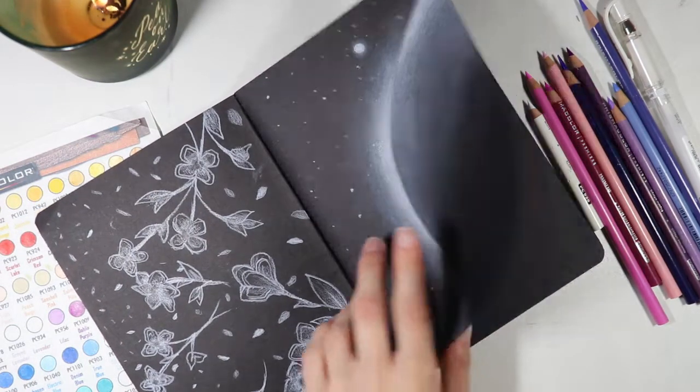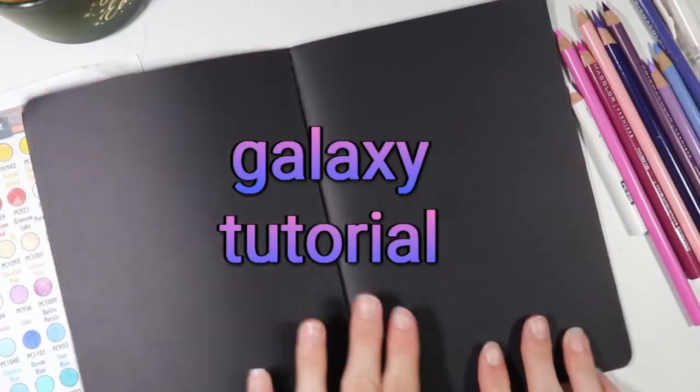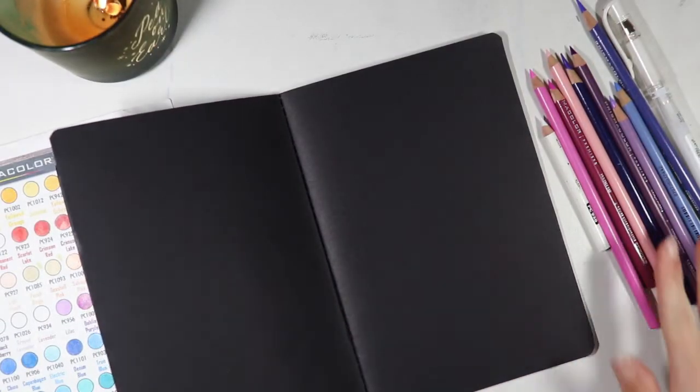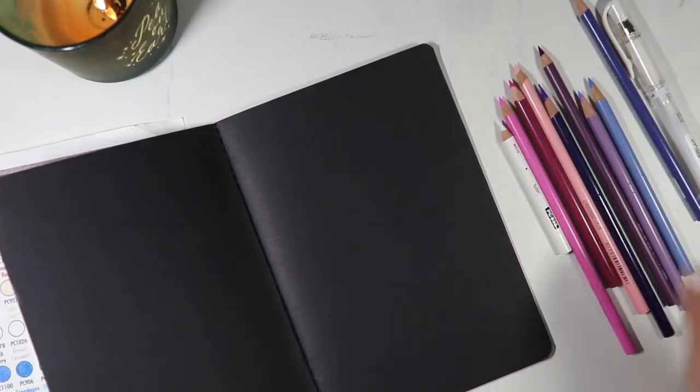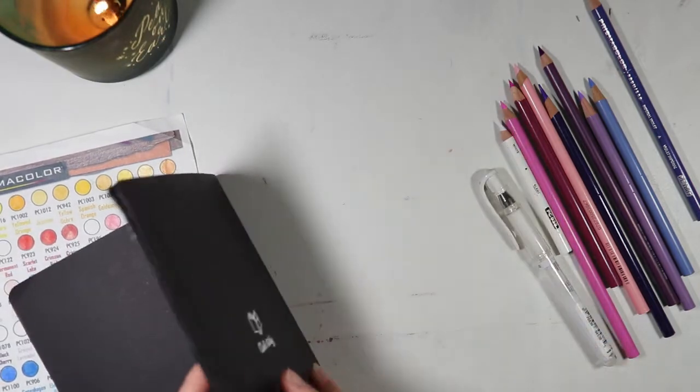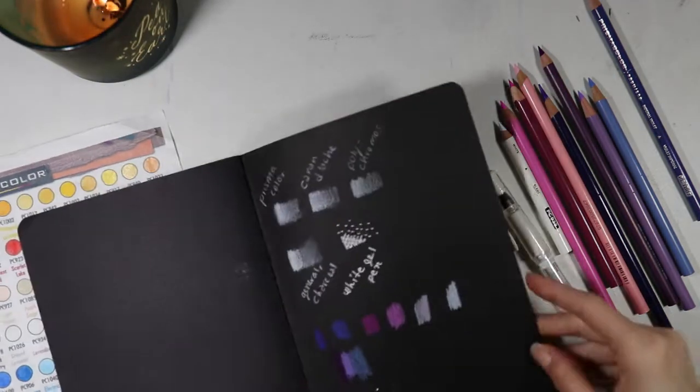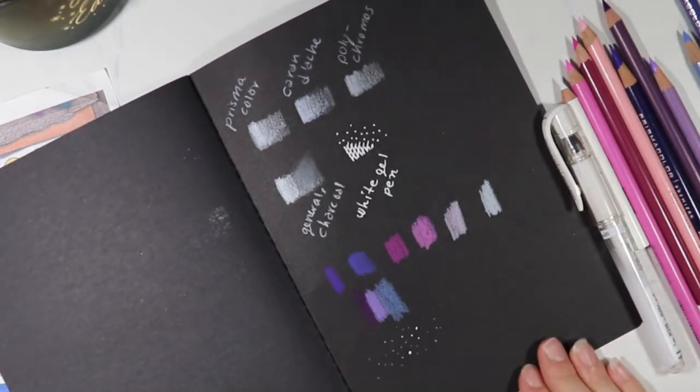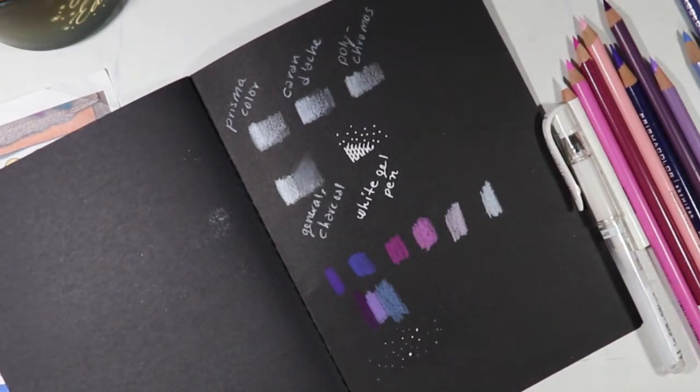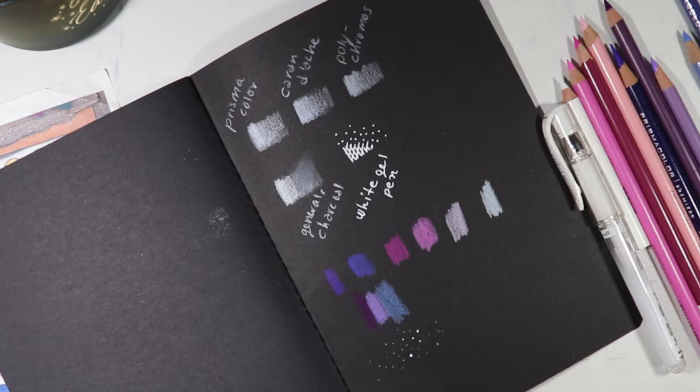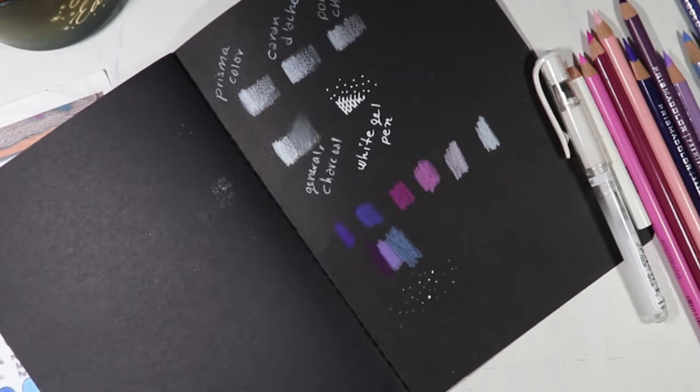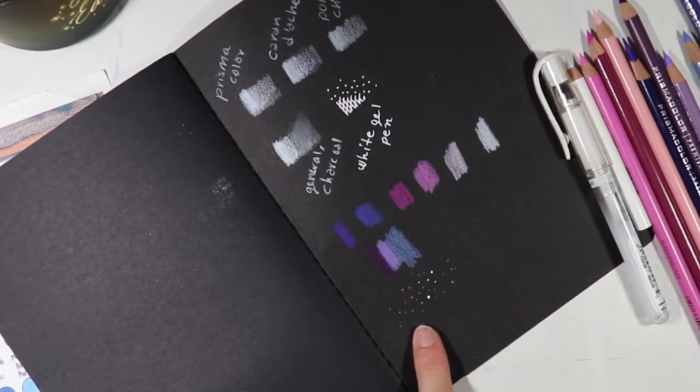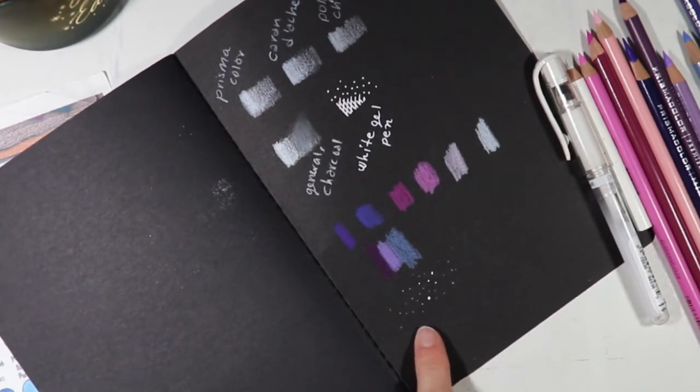I thought it would be fun to bring some color into this sketchbook and do a galaxy. So I'm going to be using pinks and purples, a little bit of blue, some white, my white gel pen. I actually did swatch these out in the back. Well, not like a proper swatch or anything like that, but I just sort of tested them out and I think that these colors look so intense and gorgeous against this black background here. I also used my gel pen and the white pencil to do some stars for practice.